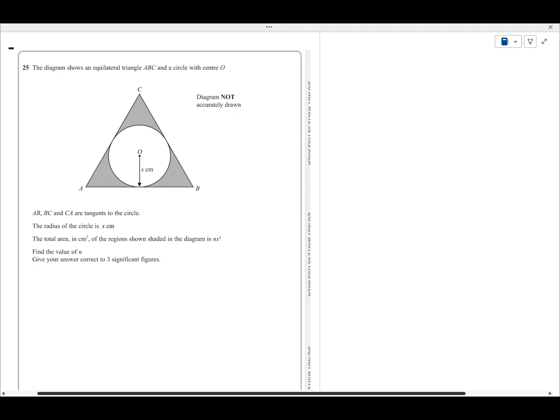I've got tangents of the circle A, B. Yes, okay, I've got a circle that's inscribed in the triangle like that. Radius of the circle is x. The total area in square centimetres of the region shown shaded is nx squared. Find the value of n, okay.